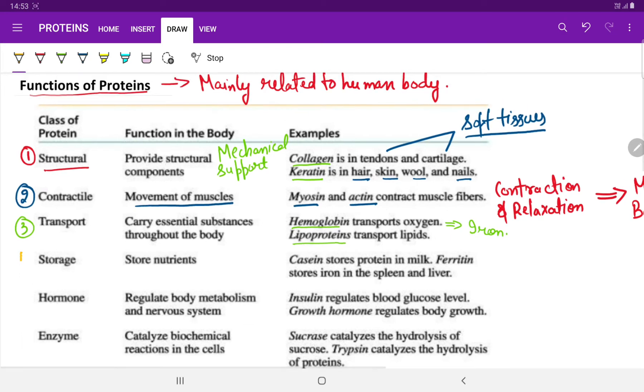The next function is of storage, to store various nutrients such as casein that stores protein in the milk. Ferritin stores iron in the spleen and liver. We come to acknowledge another protein known as ferritin which is a storage protein for iron and helps to store iron in the spleen and liver, whereas casein is a storage protein of milk.